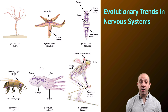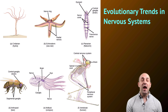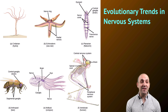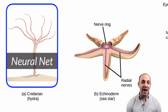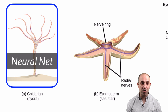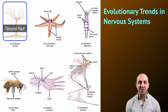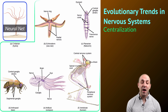Let's start with evolutionary trends in nervous systems. Here are a bunch of animals with their nervous systems shown, and we can see that even something so comparatively simple as a Cnidarian like a Hydra has a nervous system. It's a very primitive nervous system — what's called a neural net. The neurons are distributed throughout the entirety of the organism, with no centralized nervous system and no central processing unit. What we see in all of the other organisms in this diagram is a trend toward centralization of the nervous system.